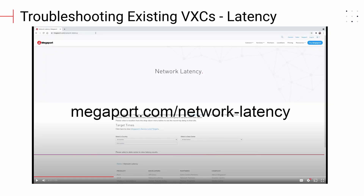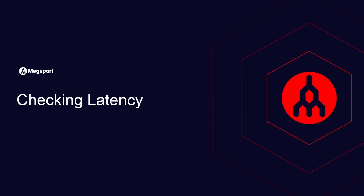From time to time, you may experience a change in latency on your service as well. This is often caused by maintenance issues on the network and usually resolves once the maintenance completes. You can examine the current latency for your services by checking the Megaport portal. Then you can compare that with historical data by checking our latency page. For more information on how to check the latency on your Megaport service, click the on-screen link or check the description down below.